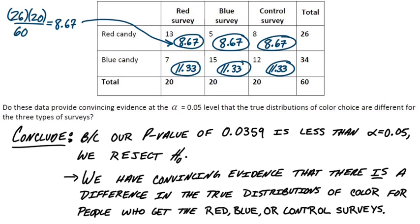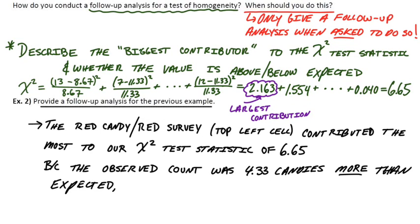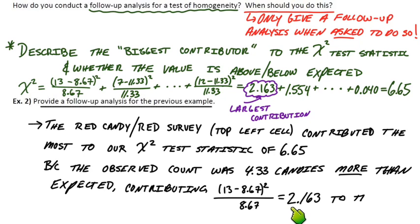In fact, it's 4.33 candies more, which actually contributed 2.163 to our chi-square test statistic. And just as a reminder, you don't have to do a follow-up analysis unless you're specifically asked to. That's when you would say who the biggest contributor was, how much did they contribute, and were they above or below the expected count?